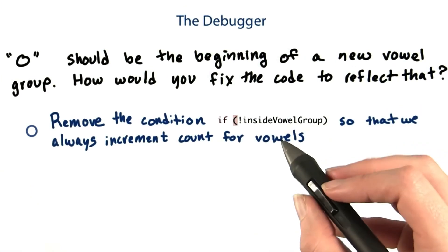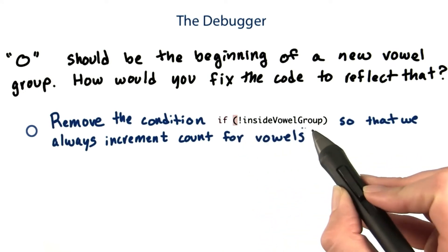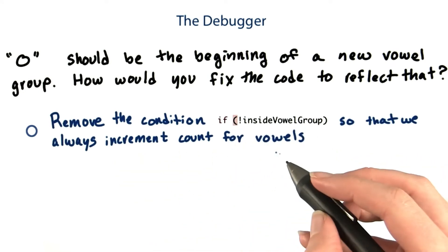Should we remove the condition if not inside vowel group, so that we always increment counts for vowels?